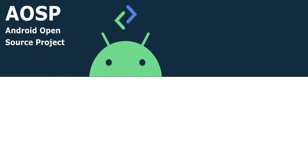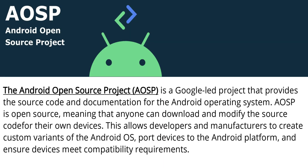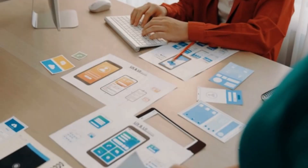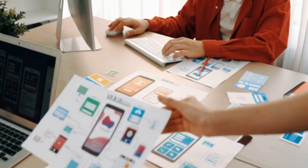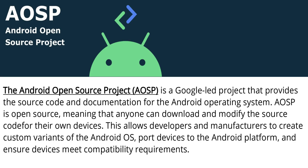First up, let's talk about Android Open Source Project, commonly known as AOSP. AOSP is the foundation of Android — it's a fully open source project for developers to create their own Android-based operating system. This applies to phones, tablets, smart watches, and streaming devices. It means that no Google apps or Google services are included by default; it's a blank slate, pretty much an open canvas.